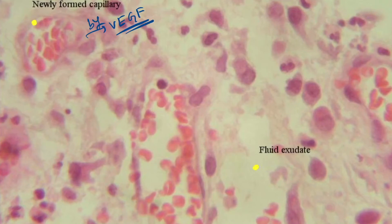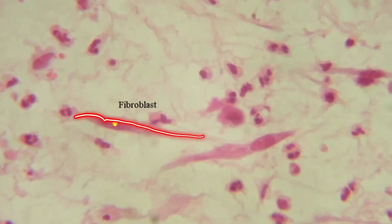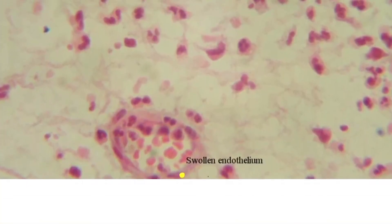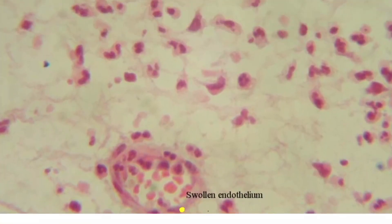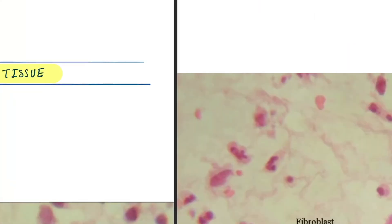Next, you can see the exudative fluid. In the next picture, you can see the fibroblasts, and here you can see the endothelium is swollen—that is a congested blood vessel.